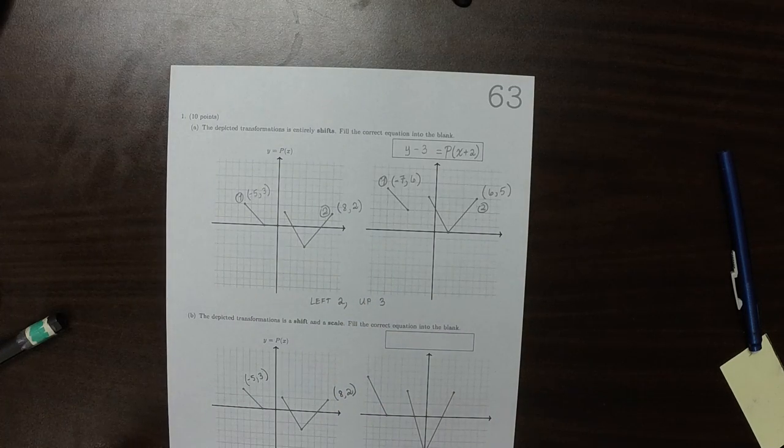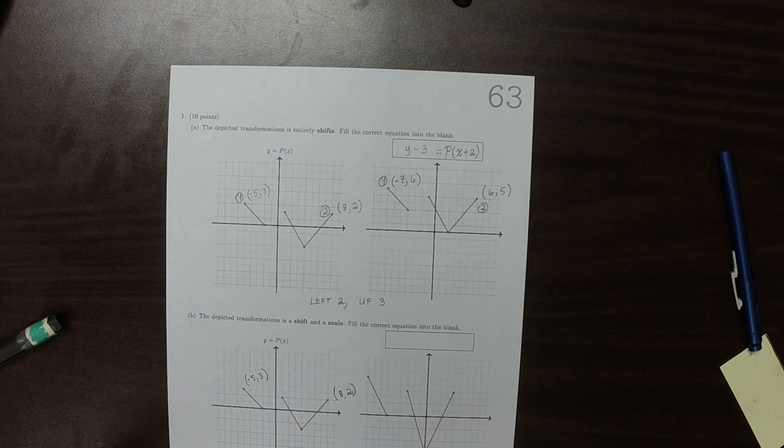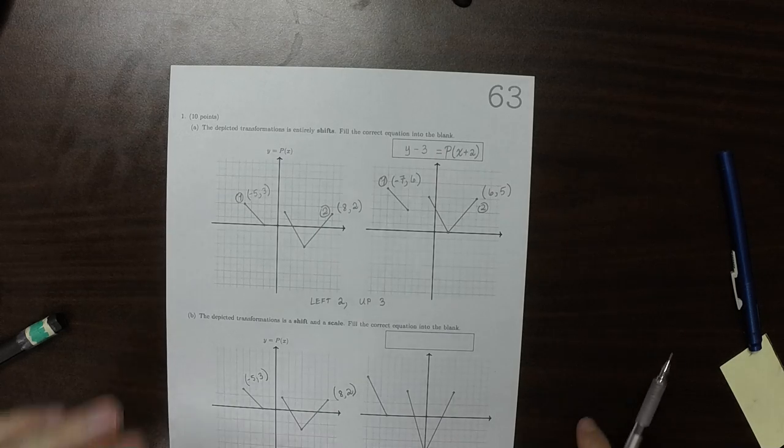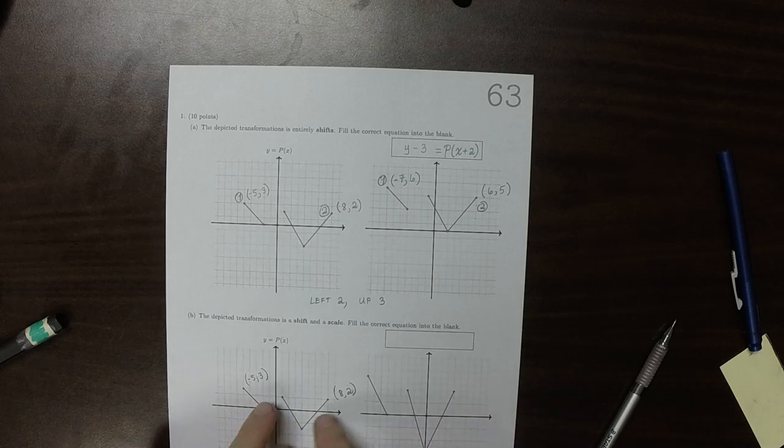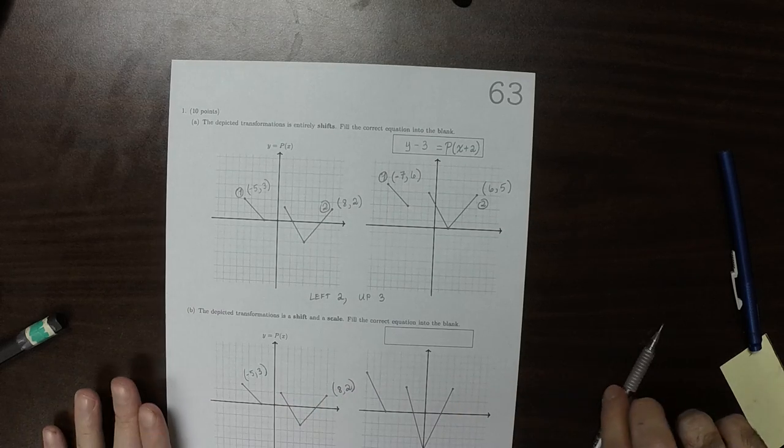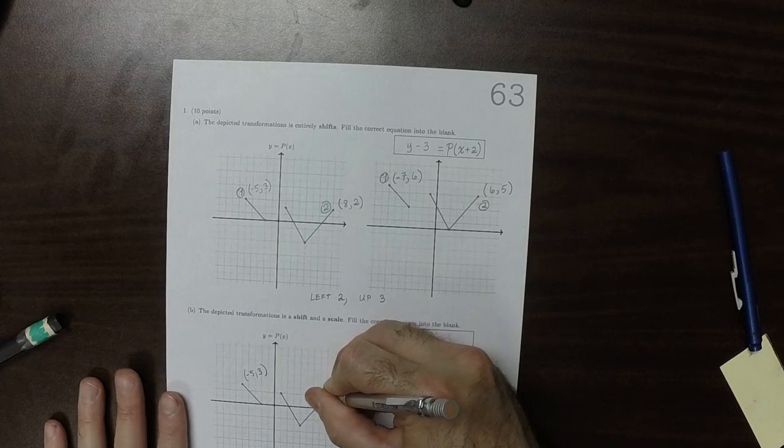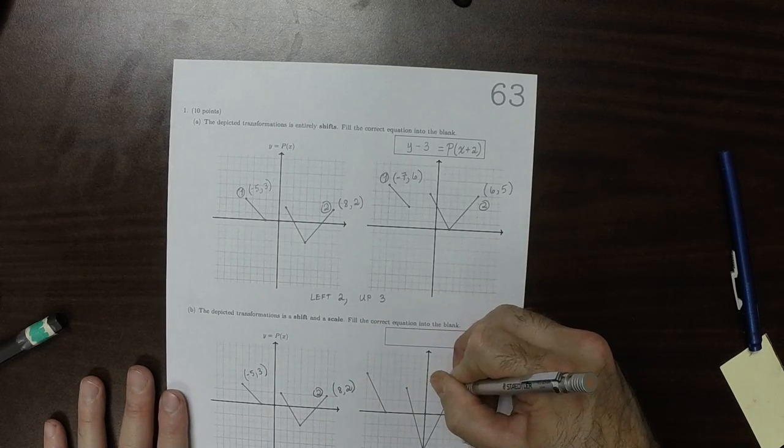And we underwent a shift and a scale. Okay, so I can see that here's the v, and there's the v again. So this is point 2, and this must be the corresponding point 2.